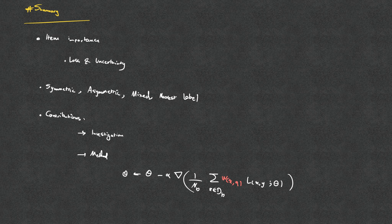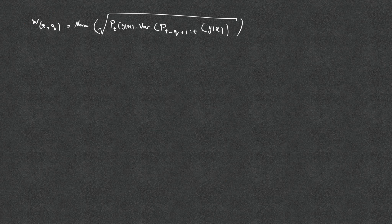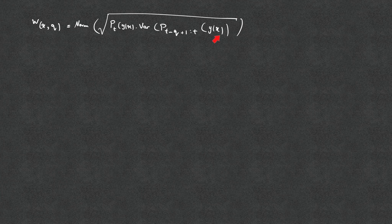This weight is associated with the example importance. Q is a value for history length — for example, Q=15 means the last 15 time steps. When you have an example x from the dataset, you also have its assigned label y, which could be a noisy label. p(t|y,x) gives the confidence or probability of the model after softmax for predicting y and associating y with x. Over the past Q time steps, you have had probabilities that the model assigned for this example to this given label, and this term is the variance of those probabilities.